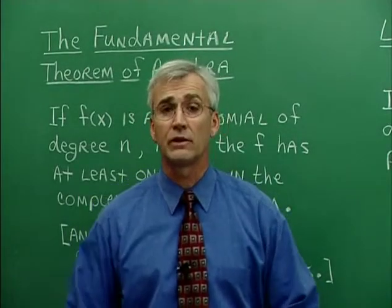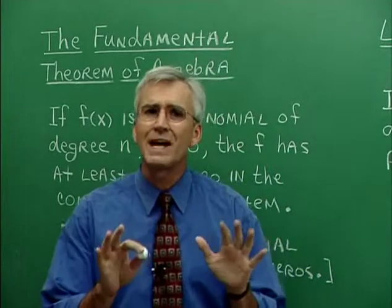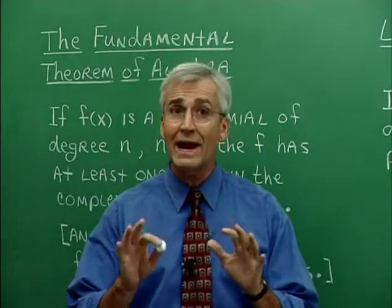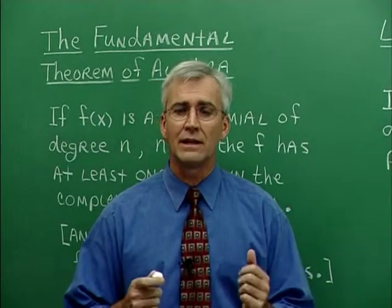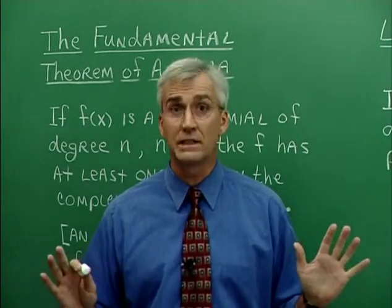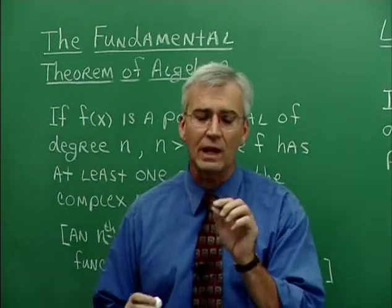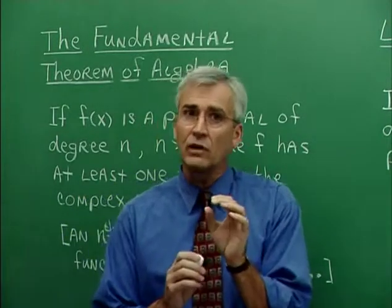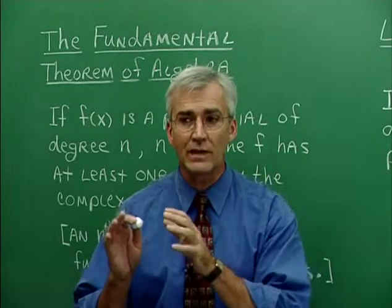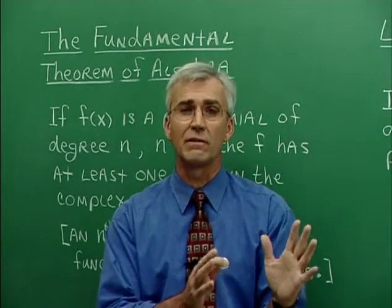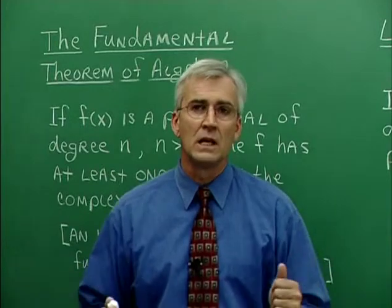In our discussions of polynomial functions up to this point, we have corresponded the notion of graphs crossing the x-axis with zeros. And that's just fine as long as we're limiting ourselves to the real number line. That is to say, if we have a function that has an x-intercept somewhere, then we say that corresponds to a zero of the function, it corresponds with a factor, and so on.